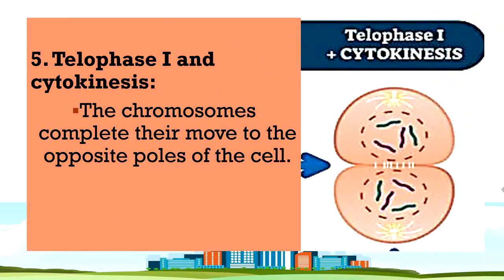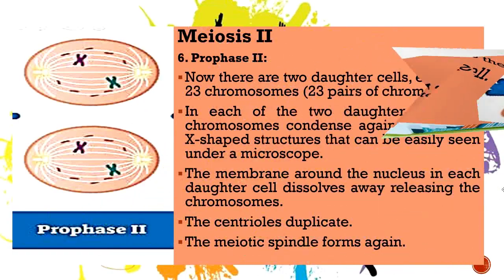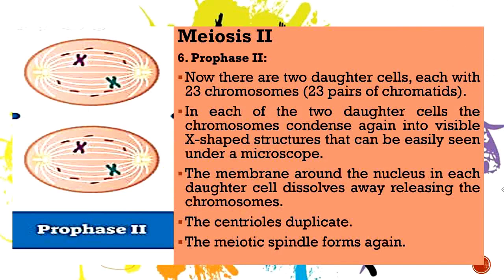You can pause the video to read the definitions and really absorb everything in them. In telophase 1 and cytokinesis, the chromosomes complete their move to the opposite poles of the cell. Now let's move on to meiosis 2.